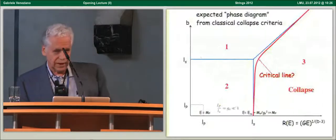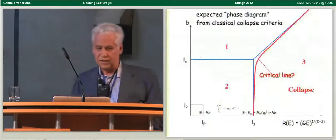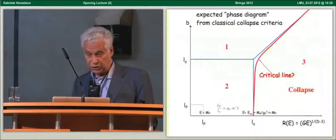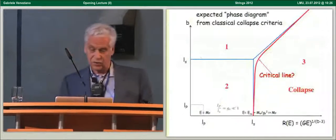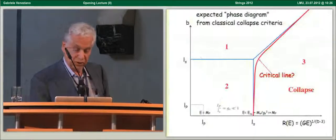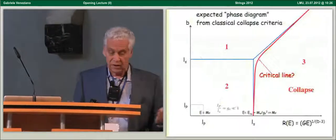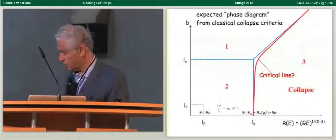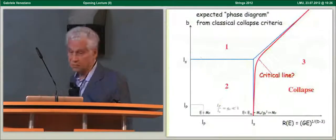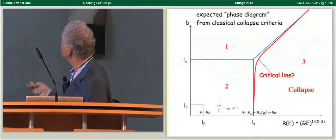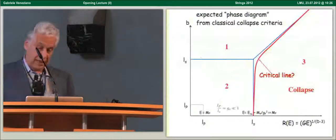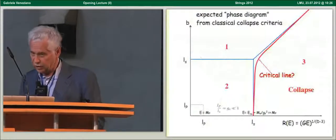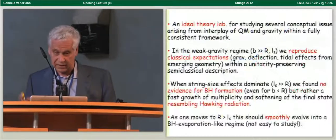Now, on classical consideration you expect some kind of phase diagram for this process in the plane in which you have the impact parameter of the collision and on the horizontal axis you have the energy of the collision which you convert into a radius a Schwarzschild radius corresponding to the center of mass energy. And, you expect these three interesting regions with quite different behavior and perhaps a critical line separating a region where you classically expect gravitational collapse from the other region where you expect the initial state to fly off to infinity classically.